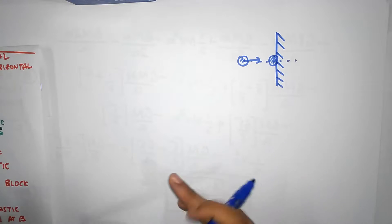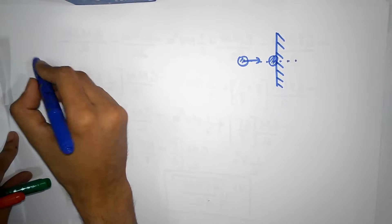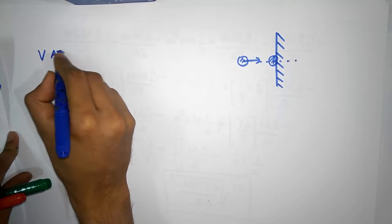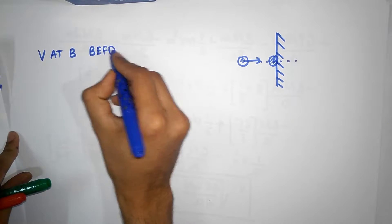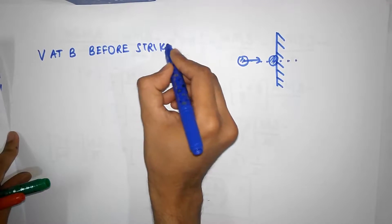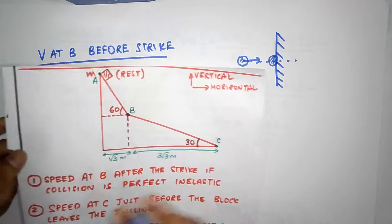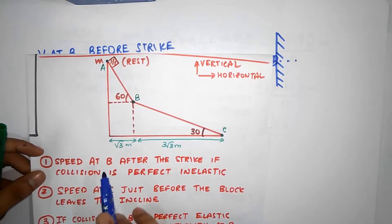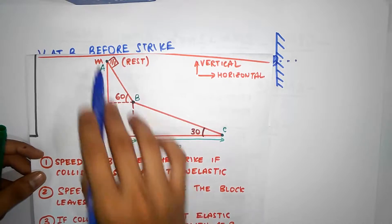So what I'm going to do first is calculate the velocity of the block at B just before it strikes. That's easy because everything is frictionless — it's mentioned in the problem. And because of that, we can use energy conservation.